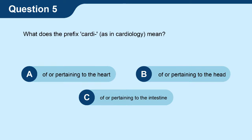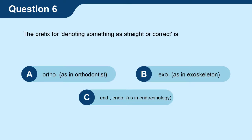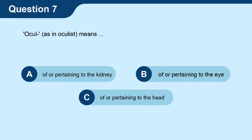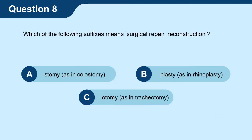Question 5: What does the prefix cardi, as in cardiology, mean? Question 6: The prefix for denoting something as straight or correct is? Question 7: Ocul, as in oculist, means? Question 8: Which of the following suffixes means surgical repair or reconstruction?